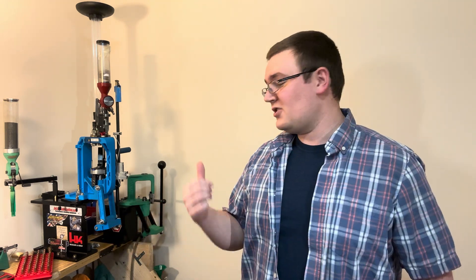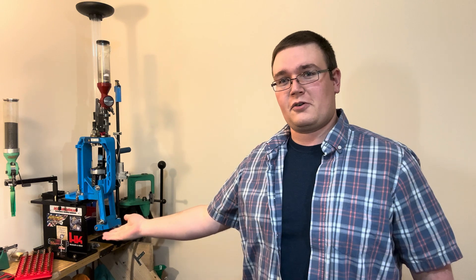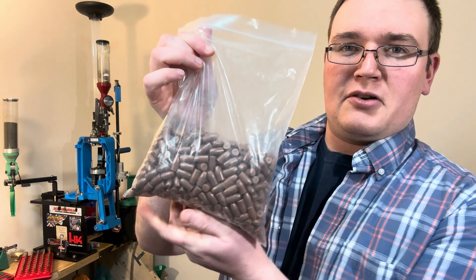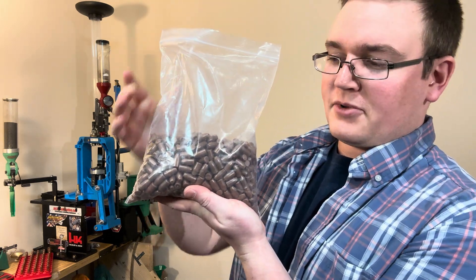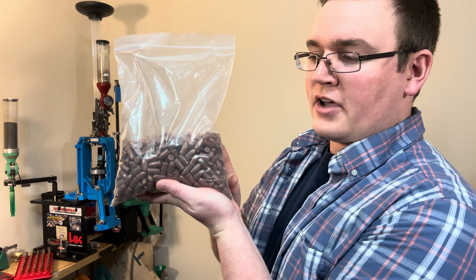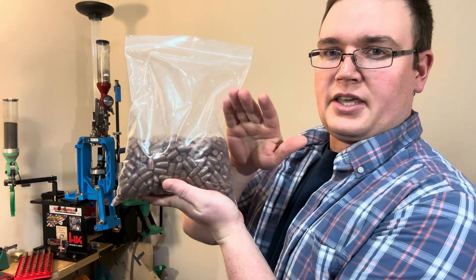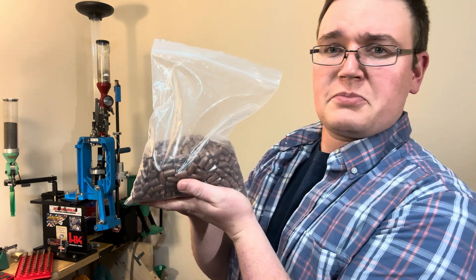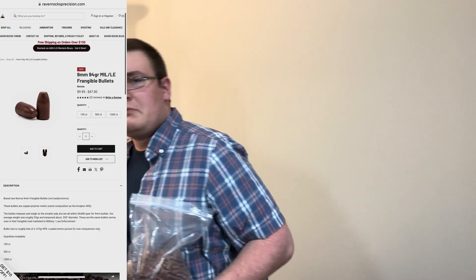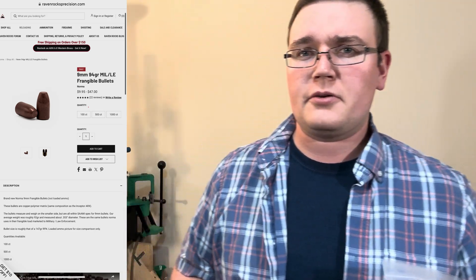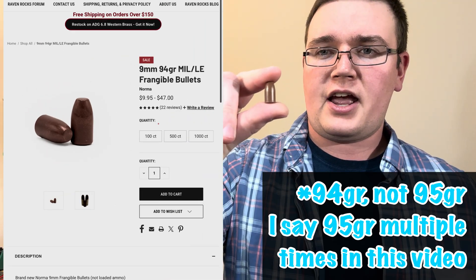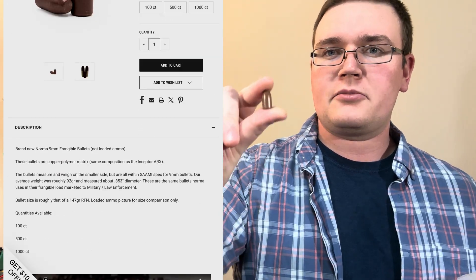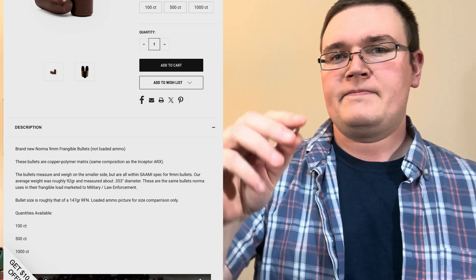Shout out to my good friend Nate. He's the one that actually sent me the link for what we're going to be going over today. And that is these guys, and hopefully you're able to see that clear on camera, but these are available on Raven Rock's Precision. These are made by Norma over in Europe, and these are a 95 grain 9mm projectile that is a polymer copper style of frangible bullet.